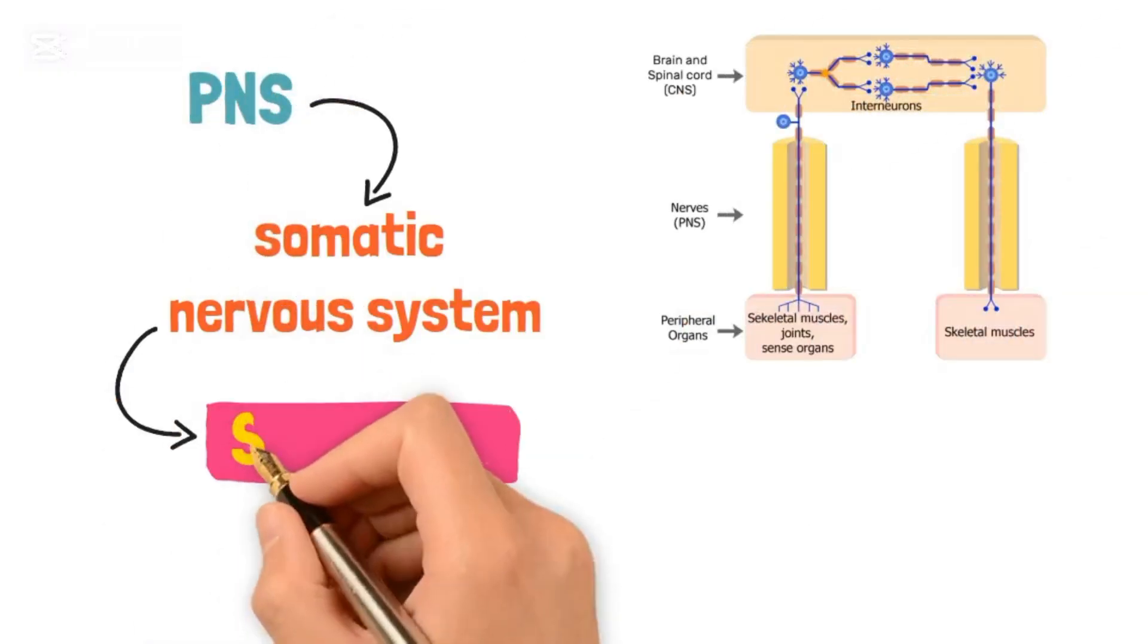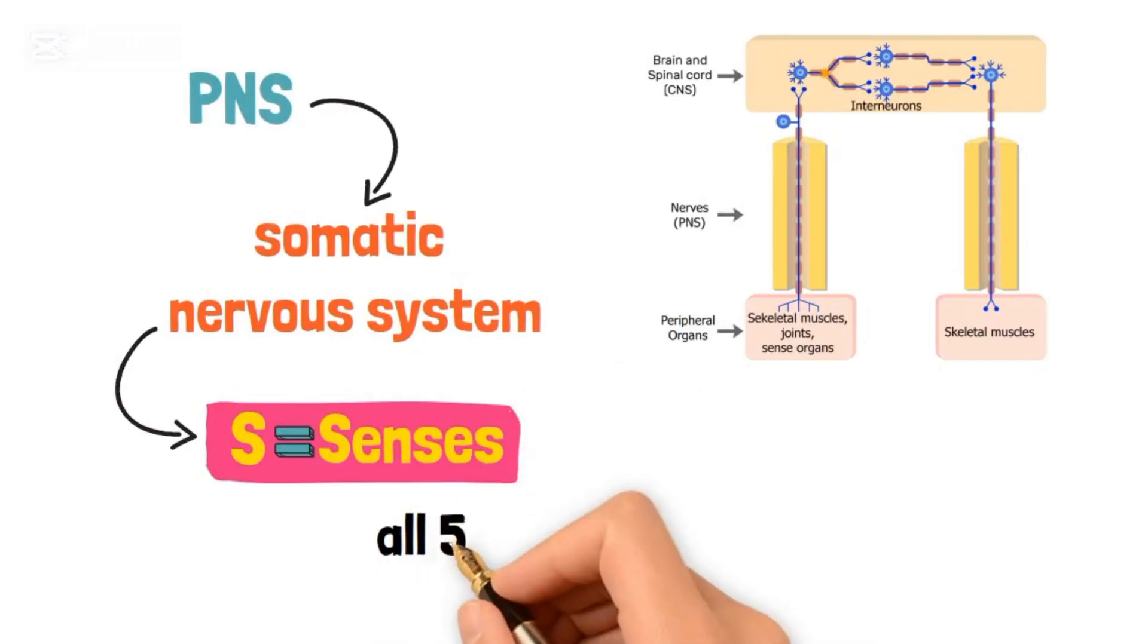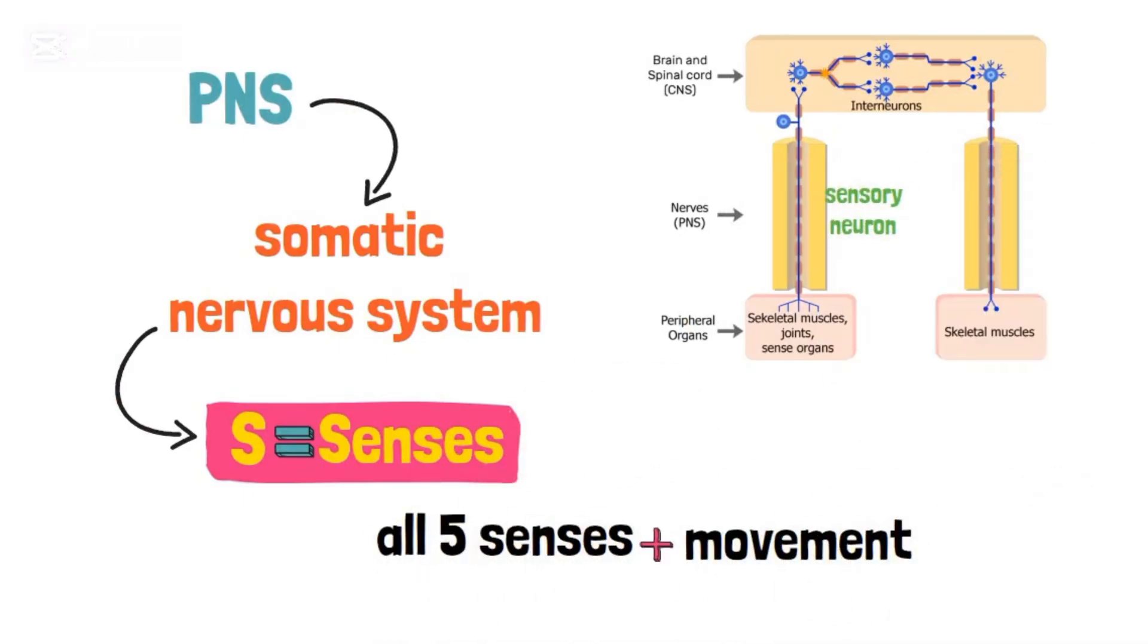The Somatic Nervous System is part of the Peripheral Nervous System. You can remember the S in Somatic is for Senses, because this system controls all five senses and movement.